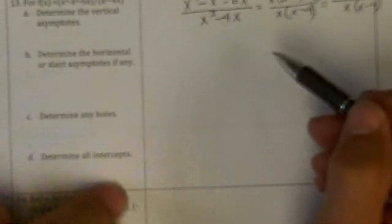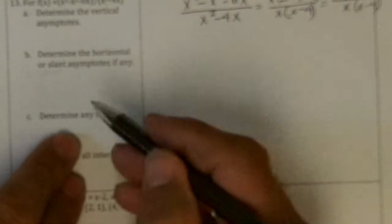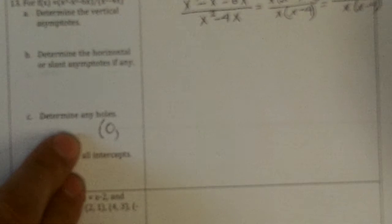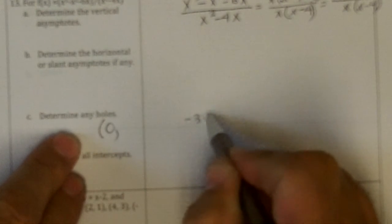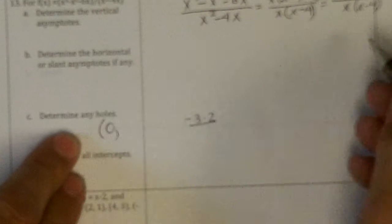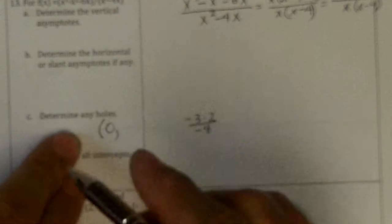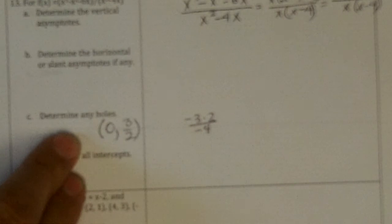So there is a hole at x equals 0. To find out what that hole is, I put 0 into the rest of it, which is minus 3 times 2 over negative 4, so that's 6 over 4, which is 3 over 2. There's the hole.